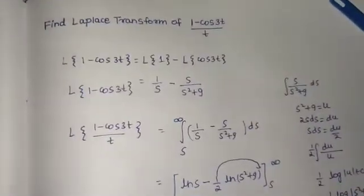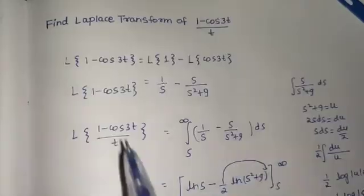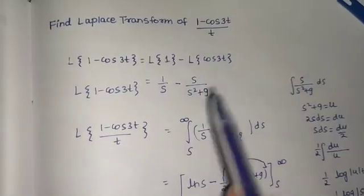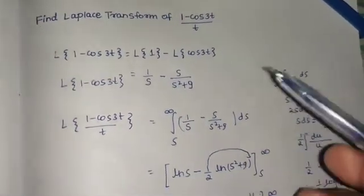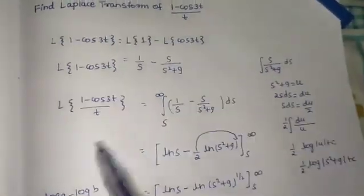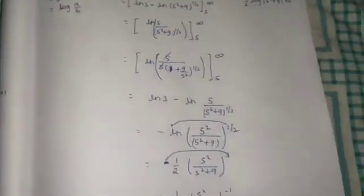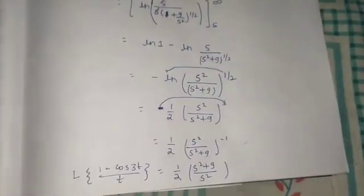Let's look at this carefully. We distributed the Laplace on 1 and cos(3t), solved each part, then applied the division by t property, and our question was solved easily.